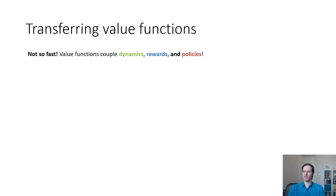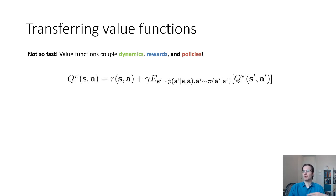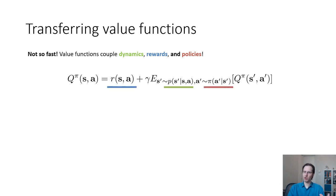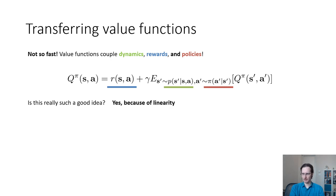One knee-jerk reaction when talking about transferring value functions might be: the value function couples dynamics, rewards, and policies — it seems like the worst thing to transfer. If we write out the equation for Q^π, the expected reward-to-go for some policy π, we can see that it involves the dynamics when calculating the expectation and the target value, it involves the reward, and it involves a policy — mixing all three together. So is this really a good idea? Sometimes yes, because even though the Q function couples all these things together, it turns out to couple them linearly. And when something is coupled linearly, it can be not so bad that it's entangled.